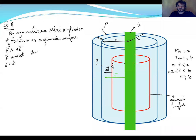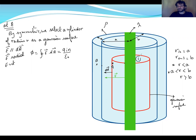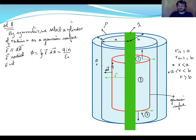In general, flux equals the integral of E·dA equals Q_n divided by epsilon_0. For our cylinder we have three sides. dA for the top points upward and dA for the bottom points downward; for these two sides E is perpendicular to dA, so the angle equals 90 degrees. Therefore phi_1 equals phi_3 equals zero, and phi_total equals only phi_2.